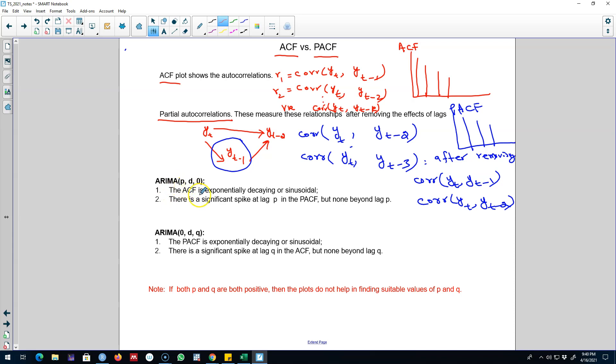ARIMA model of the form (p,d,0) if the autocorrelation function is exponentially decaying or sinusoidal - that is, it will decay exponentially and move towards zero - and then we have a significant spike at lag p in the PACF